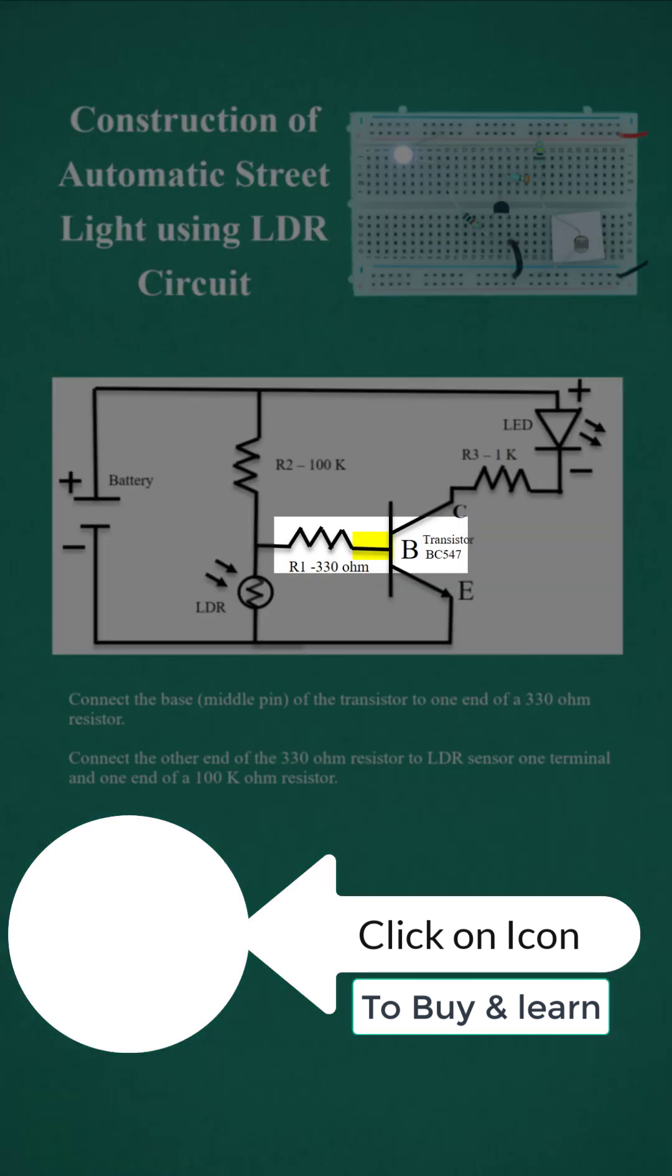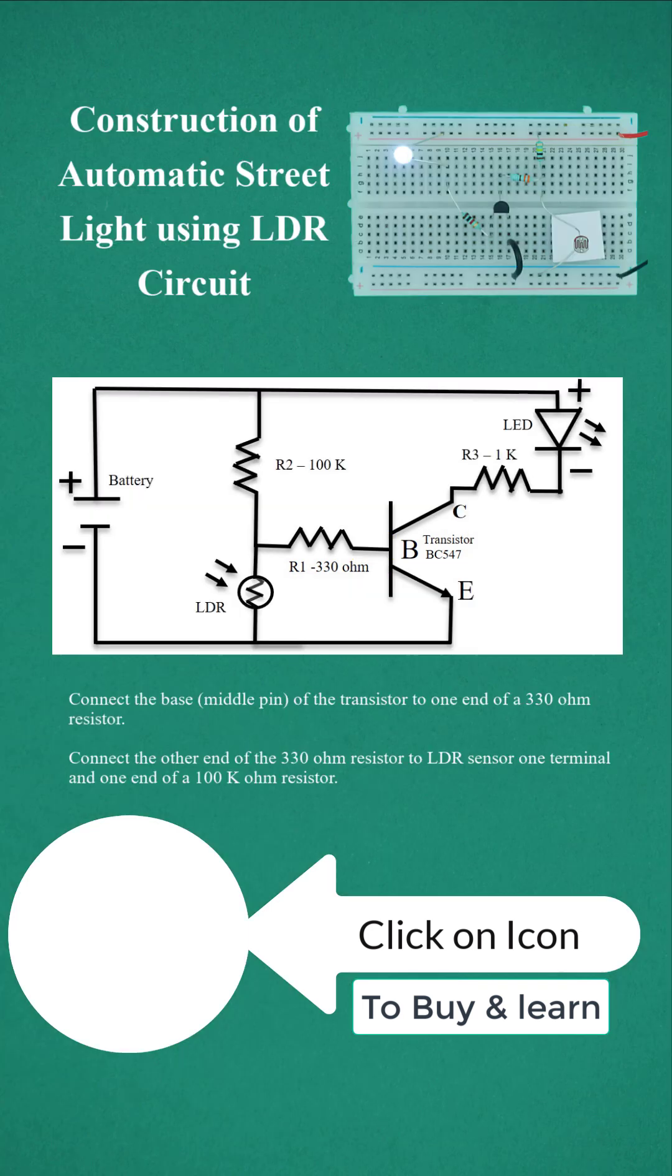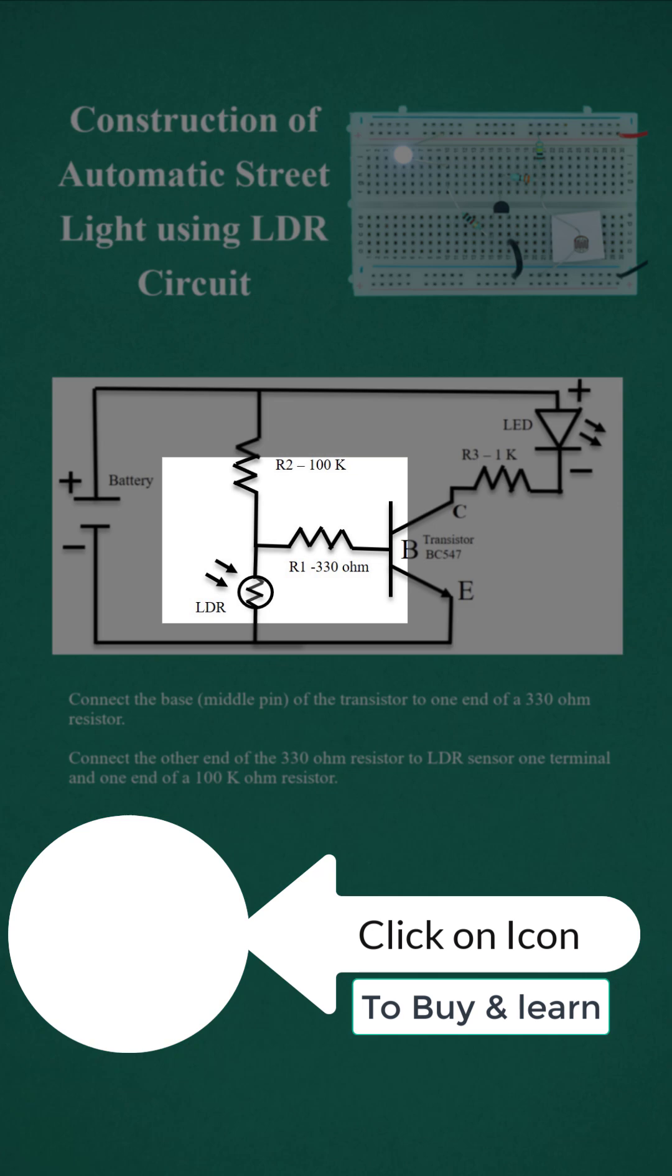Connect the base middle pin of the transistor to one end of a 330 ohm resistor. Connect the other end of the 330 ohm resistor to the LDR sensor first terminal and one end of a 100 kilohm resistor.